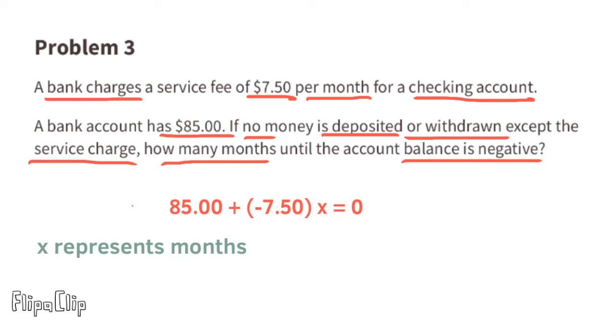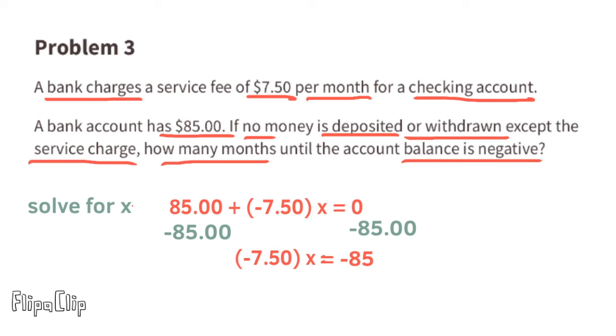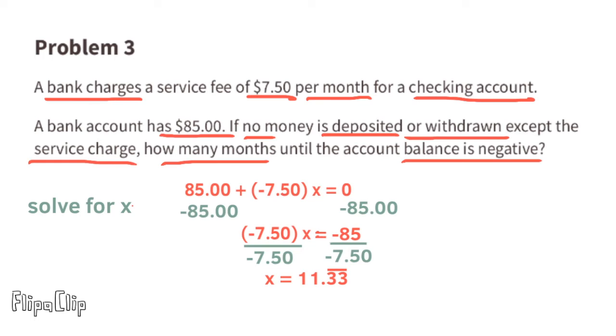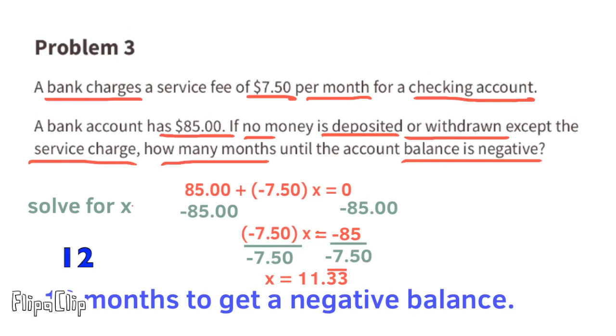We could think of this as $85 plus negative $7.50 times x equals zero. In this case, x represents number of months. Now all we have to do is solve for x. Subtract 85 from both sides. Now we're left with negative 7.5x equals negative 85. Divide both sides by negative 7.5, and x equals 11.3 repeating. That's more than 11 months, so it would take 12 months before the account balance is negative.